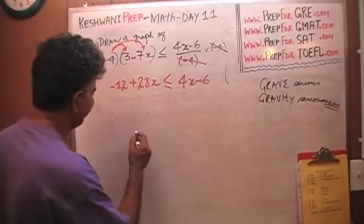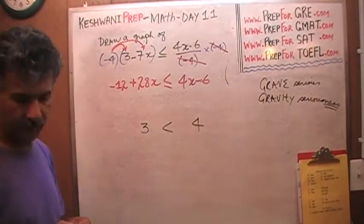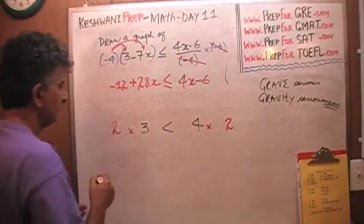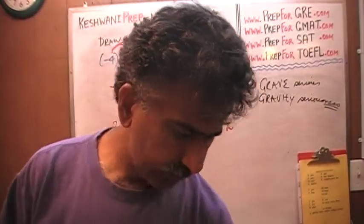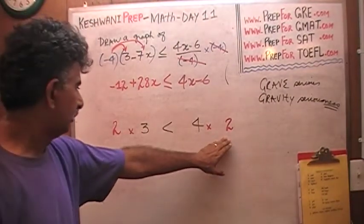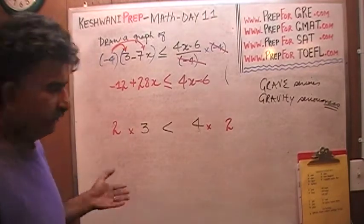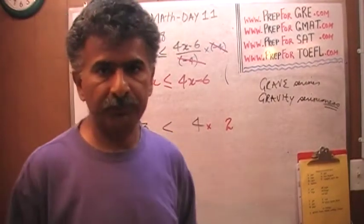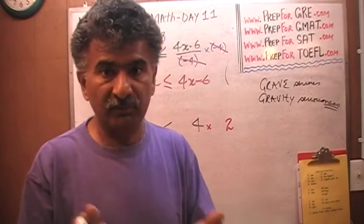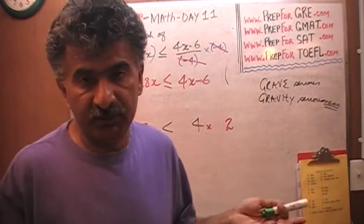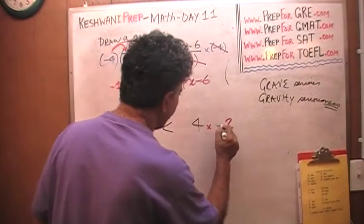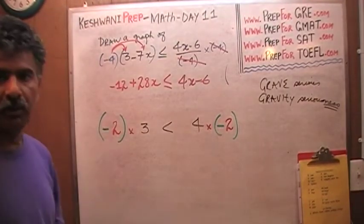When dealing with inequalities, people make a very common mistake. Let me give you a simple example. Would you agree that three is less than four? Obviously. Now just multiply both sides by two — would you agree that three times two is less than four times two? Yes, because we multiplied both sides by the same number. But what would happen if instead of multiplying by two, we multiplied both sides by negative two?